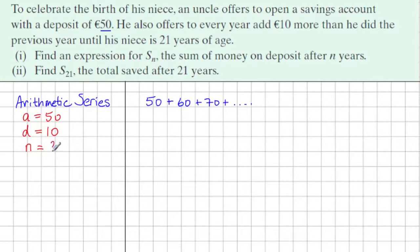In the question, I suppose we're interested what is N. It does say that every year until the child is 21 years of age. So let's consider how long this series is. If to celebrate the birth of the niece, she would be zero years old and on her first birthday she gets 60, her second birthday is 70, and this keeps going until she's 21.